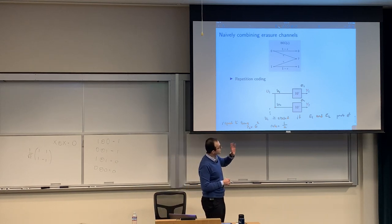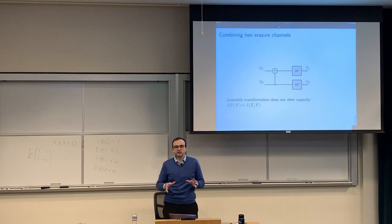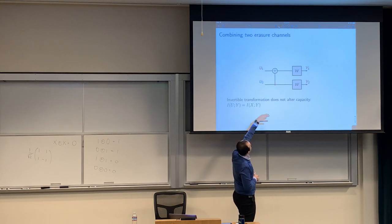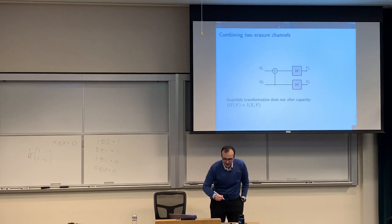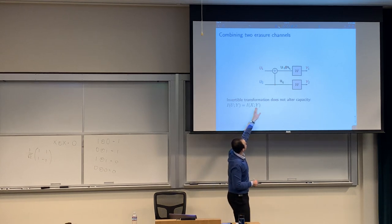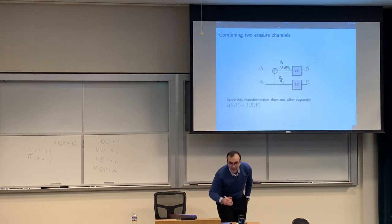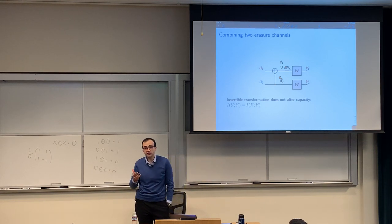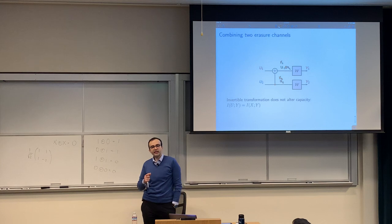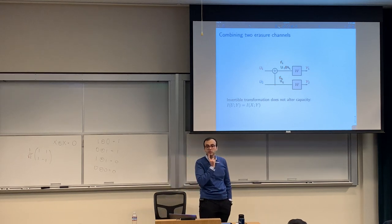Let's combine two erasure channels more cleverly by plugging in the 2×2 transformation: the inputs to the two channels are U1 XOR U2 and U2. This actually does nothing to the total capacity directly, because the transformation is invertible — the mutual information between U and Y equals the mutual information between X and Y. But there will be something very interesting happening if you look at the bits one by one after applying the transformation.